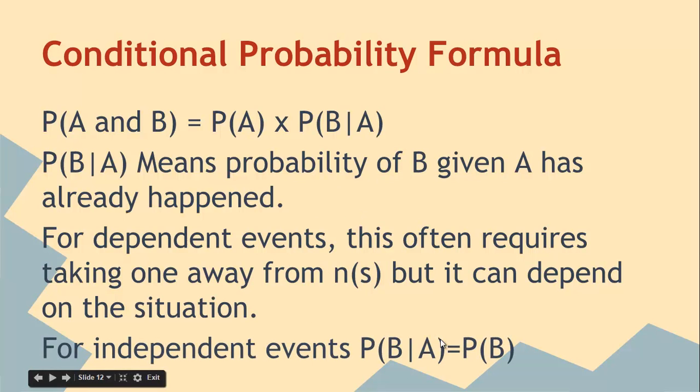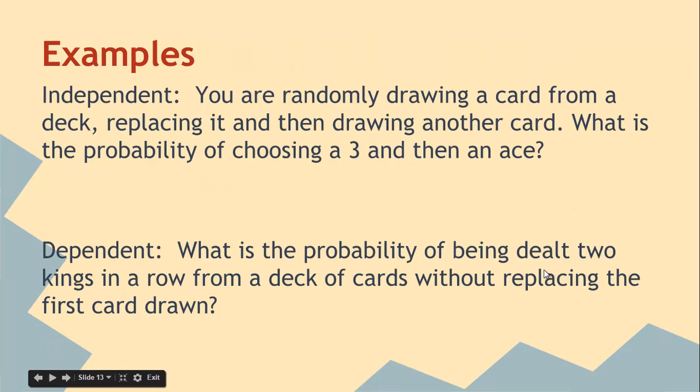For independent events, this second part is just PB. So it doesn't matter because it doesn't impact it. So if you're rolling dice, probability of A times the probability of B is the way to do it. If you want to say, what's the probability of getting a four then a six? Well, it's one out of six times one out of six. But if you're doing something like flipping cards and you're not replacing them back in the deck, then that changes what the probability of the second one is. I'll show you an example.